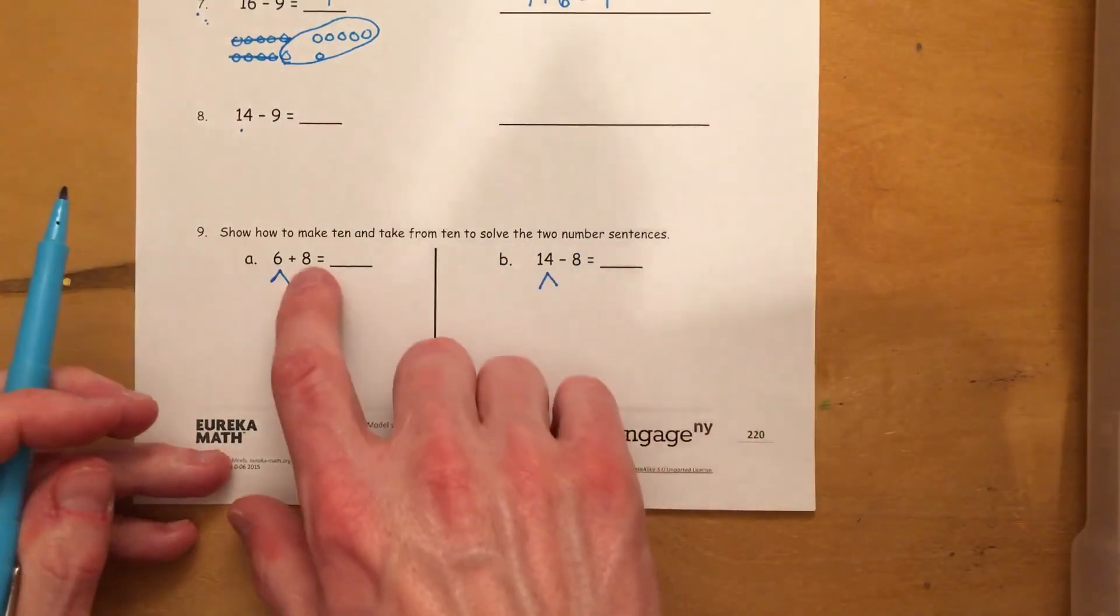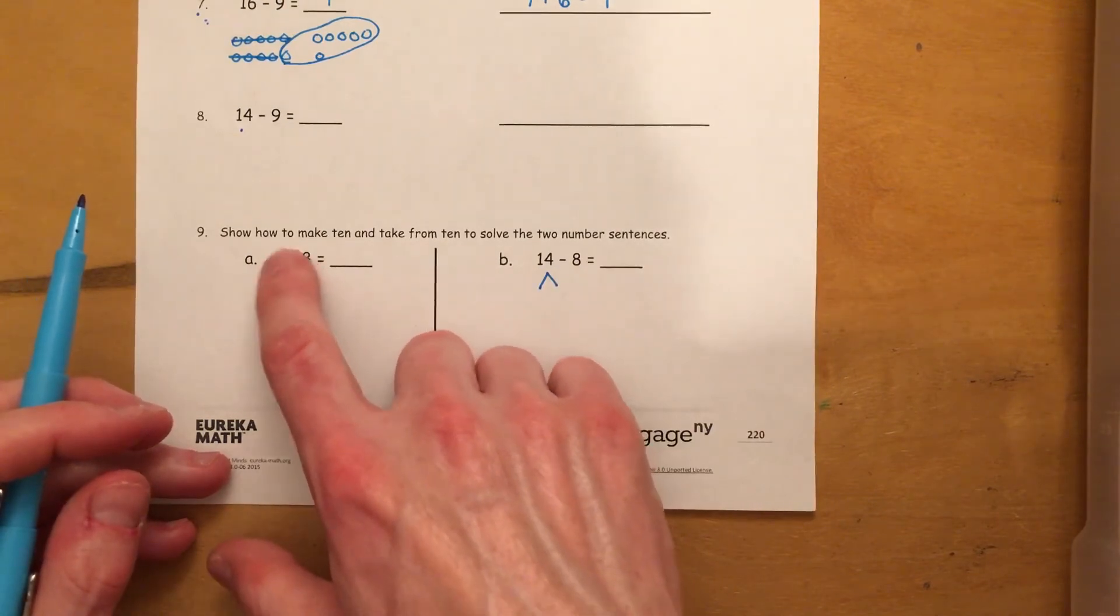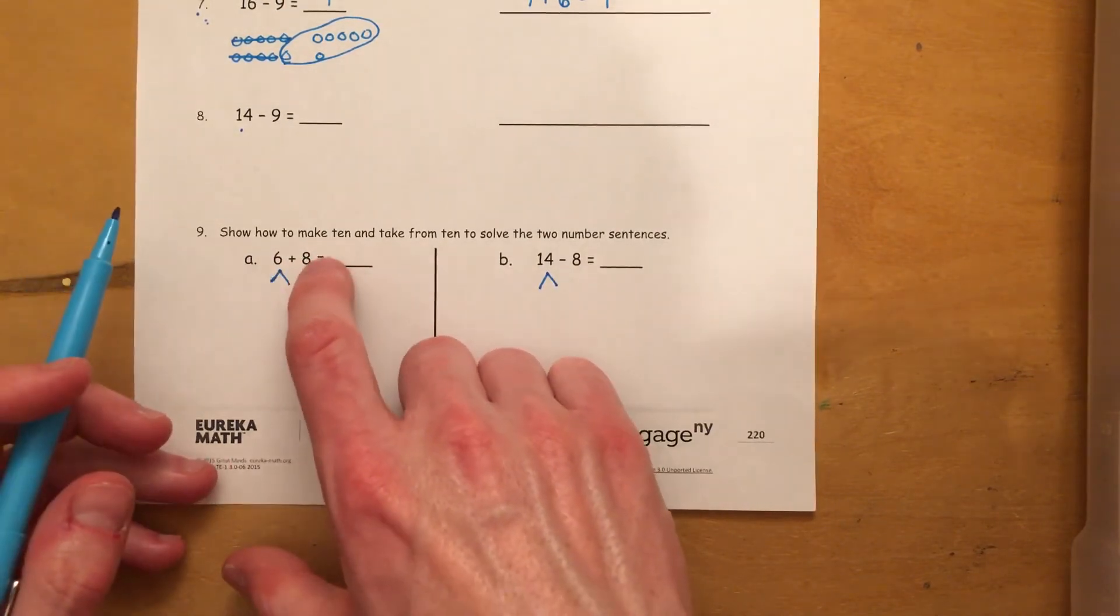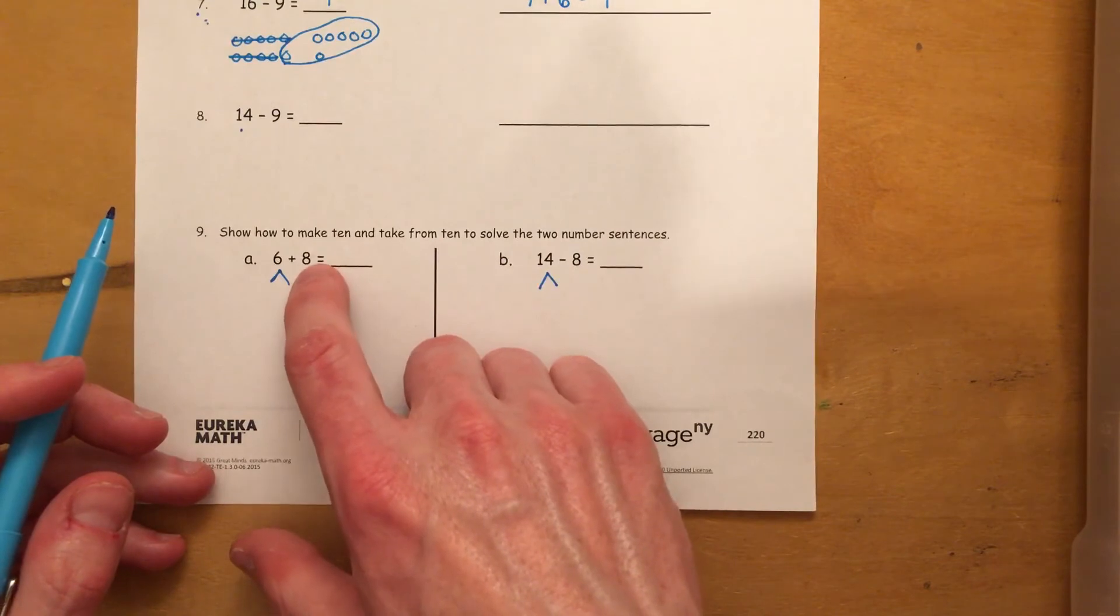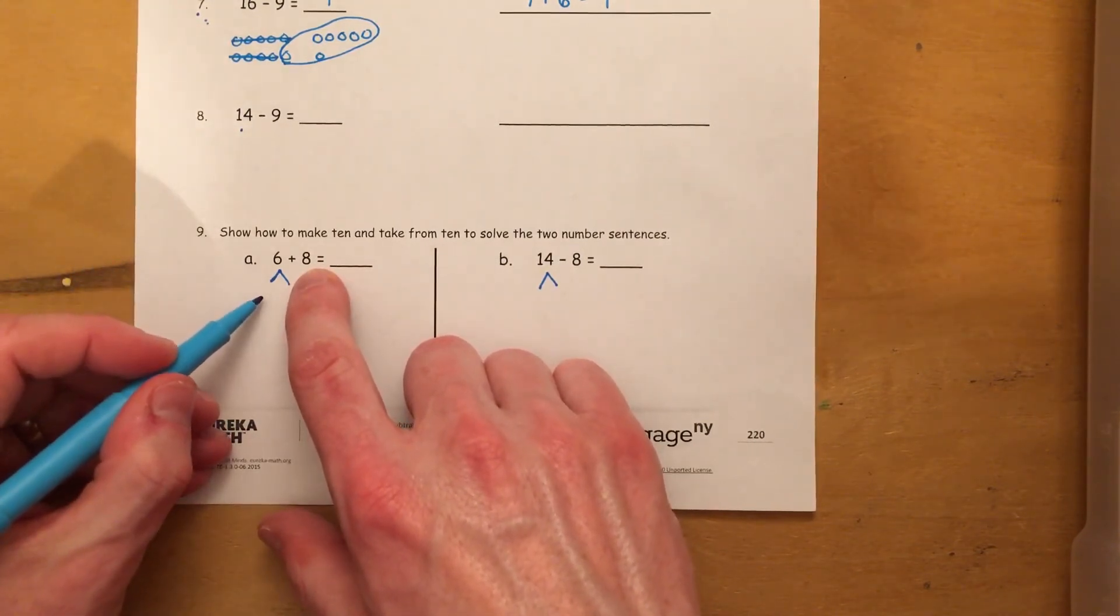So we're going all the way back to making a 10 with our addition. So what you would want to do is you want to split the 6 so that you can add to make that 8 into a 10. Okay? And you would put your remainder over here.